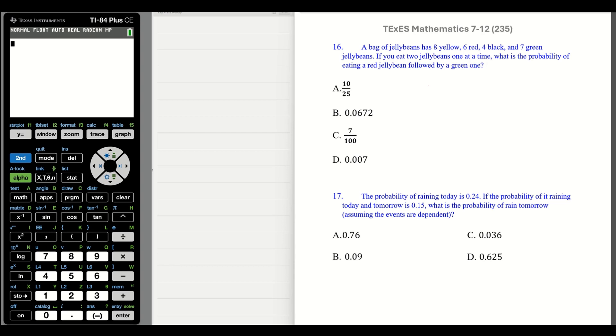Number 16. A bag of jelly beans has eight yellow, six red, four black, and seven green jelly beans. If you eat two jelly beans, one at a time, what is the probability of eating a red jelly bean followed by a green jelly bean? Okay. First, you're eating the jelly beans. That implies that we're not going to replace our jelly bean. I hope you don't replace your jelly bean. Okay. We're going to eat two of them. So we have the first one. Okay. And the fact that we're eating one, not replacing it, pulling out another one, means that we're going to multiply. And this is a dependent situation. We have two dependent events.